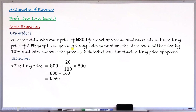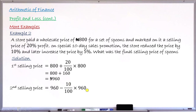During the special sales period, the price is reduced by 10%. The second selling price is 960 minus 10% of 960. Since 10% of 960 is 96 Naira, subtracting gives a second selling price of 864 Naira. So during the promotion, the spoons cost 864 Naira instead of the original 960.